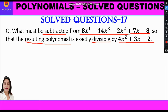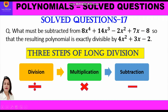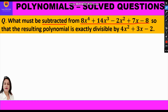Now, this is our question. We will use the long division method to solve it. Long division of polynomials is the same as any other long division of whole numbers, and we shall use three steps: the first step is division, second is multiplication, and third is subtraction. What must be subtracted means we have to find a term to subtract from the dividend — 8x⁴ plus 14x³ minus 2x² plus 7x minus 8 — so that the resulting polynomial is exactly divisible by the divisor, which is 4x² plus 3x minus 2.